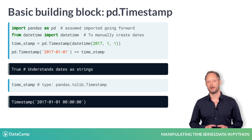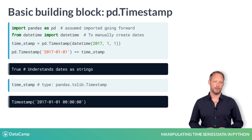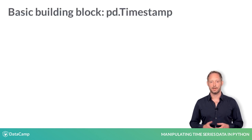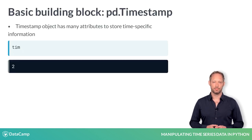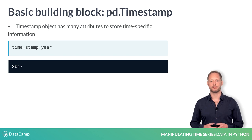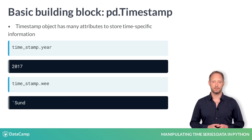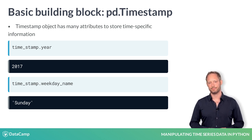If you display the timestamp, you'll notice that the time has been automatically set to midnight. The Pandas timestamp has attributes, so you can access various time aspects of your data. You can, for instance, retrieve the year or the name of the weekday.